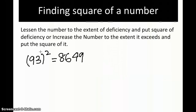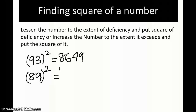Let's take one more example: 89 squared. Lessen the number by the extent of deficiency — 89 is deficient by 11 from 100, so subtract 11 again: 89 minus 11 gives 78. The deficiency is 11, and 11 squared is 121. We can only accommodate two digits here, so we write 21 and carry 1. The answer is 7921.